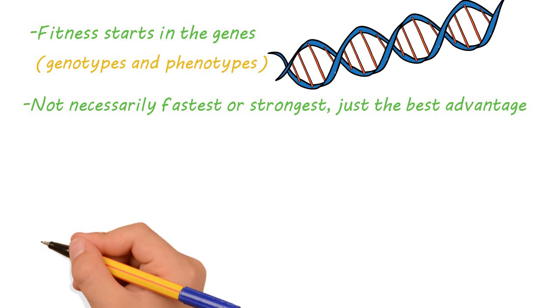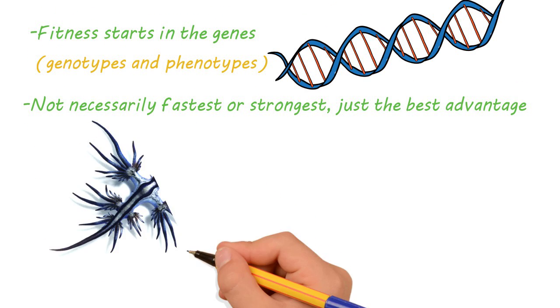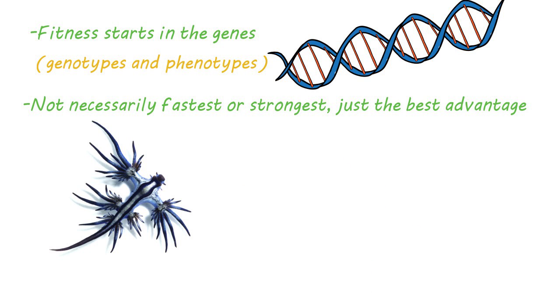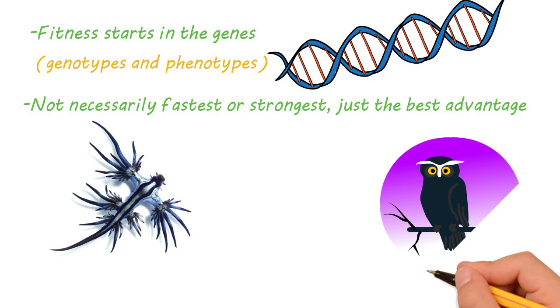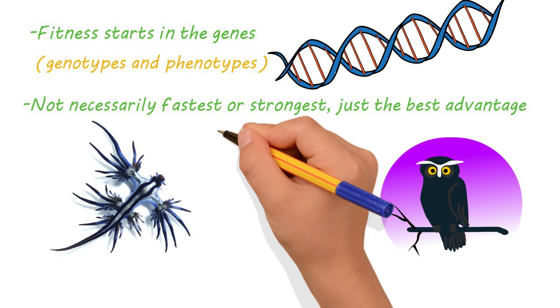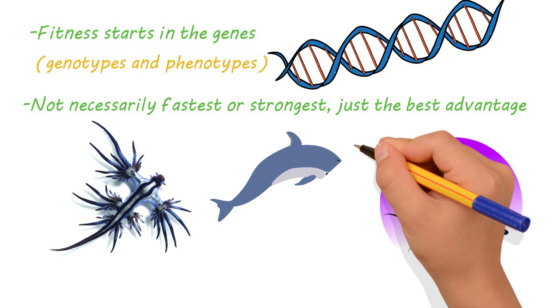Examples include traits like camouflage to hide from predators, acute night vision for hunting prey, or even sleeping with one eye open to stay alert, like our friend the dolphin.